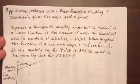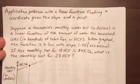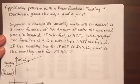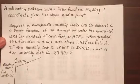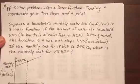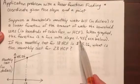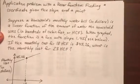Suppose a household's monthly water bill in dollars is a linear function of the amount of water the household uses in hundreds of cubic feet or HCF. When graphed, the function is a line with slope 1.45.